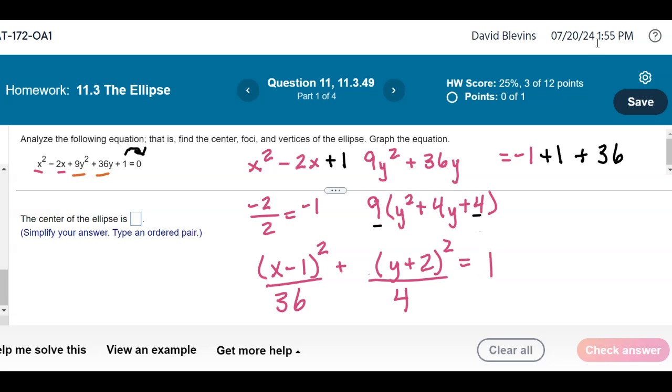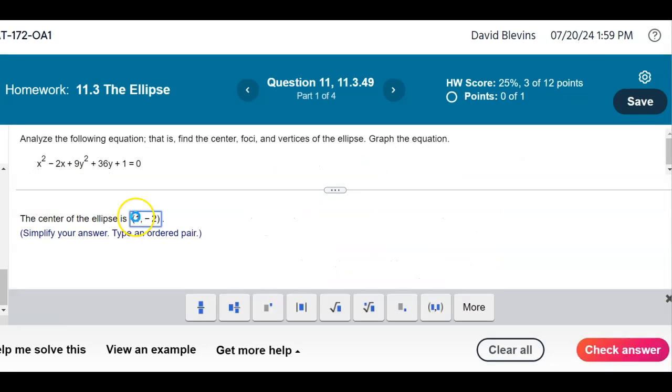There is the standard form of the ellipse, and now I can see that the center is 1 for x, negative 2 for y. So there's my center.